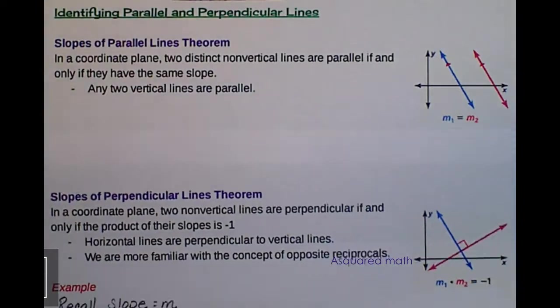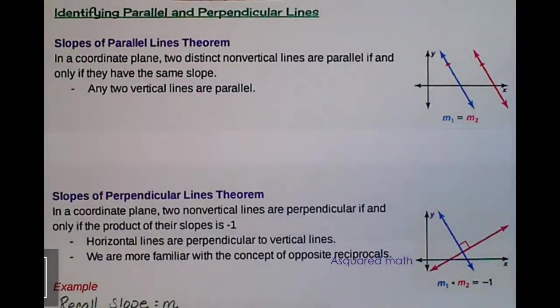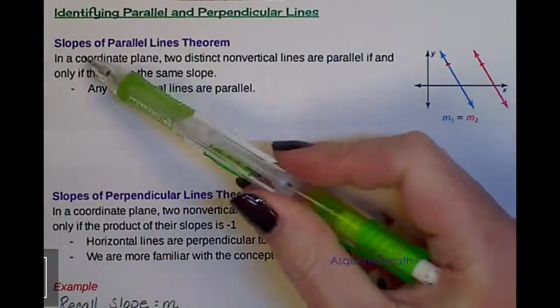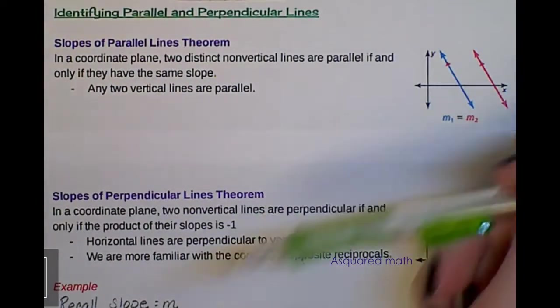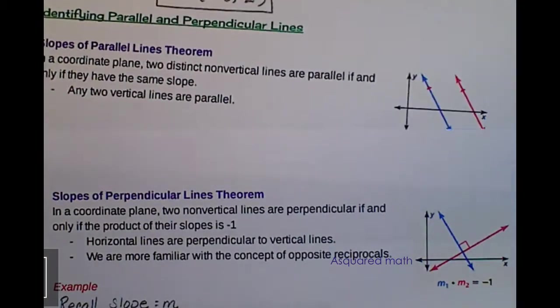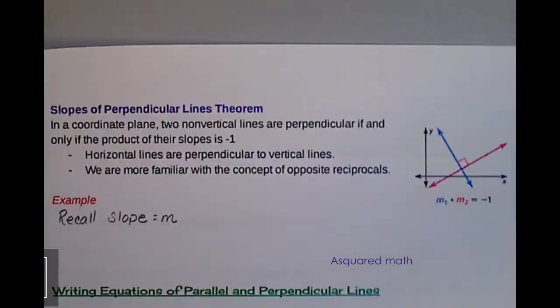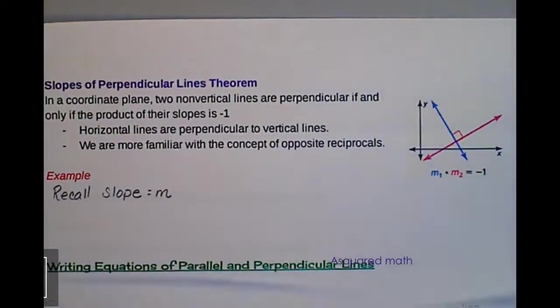And then, if we're looking at slopes for perpendicular lines, we know that they have opposite reciprocals. Or, in this book, they talk about their product of their slopes is negative 1. And I'm going to show you an example in just a second about what that means. But perpendicular means that they have 90 degrees, so they cross at a 90 degree angle. So those two theorems, the slopes of parallel lines theorem, and slopes of perpendicular lines theorem, you may have been introduced to in algebra 1.